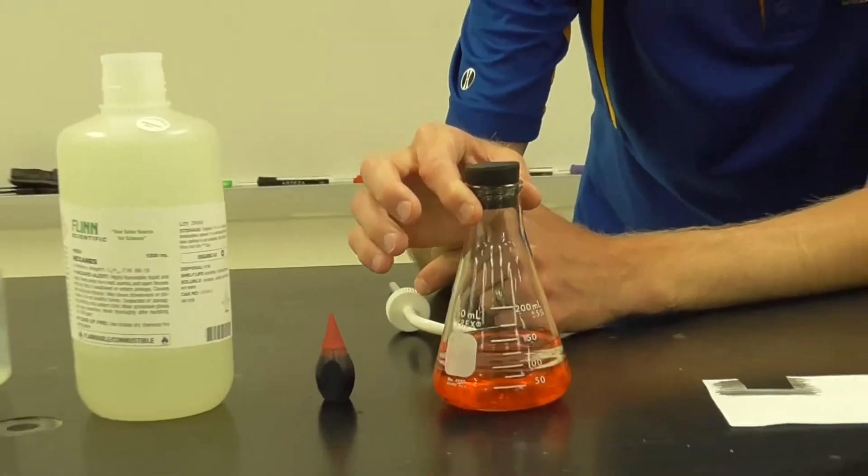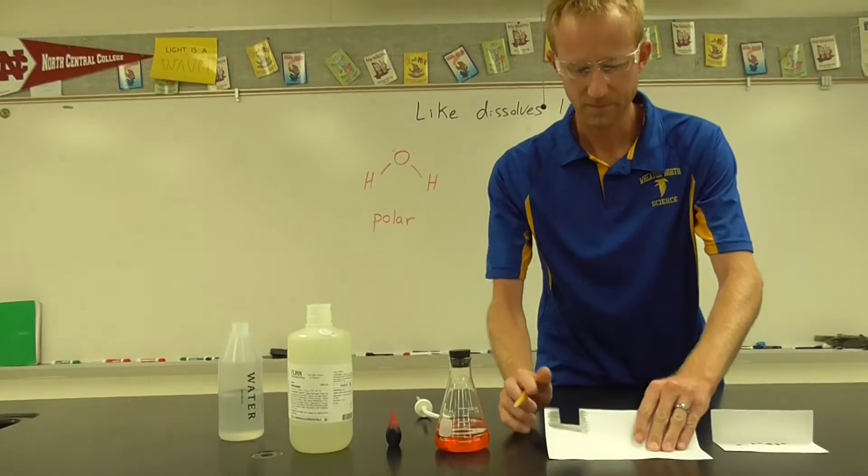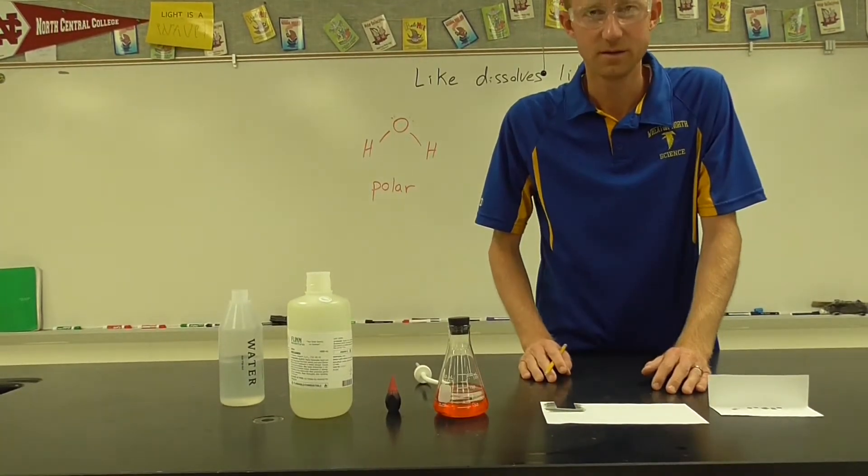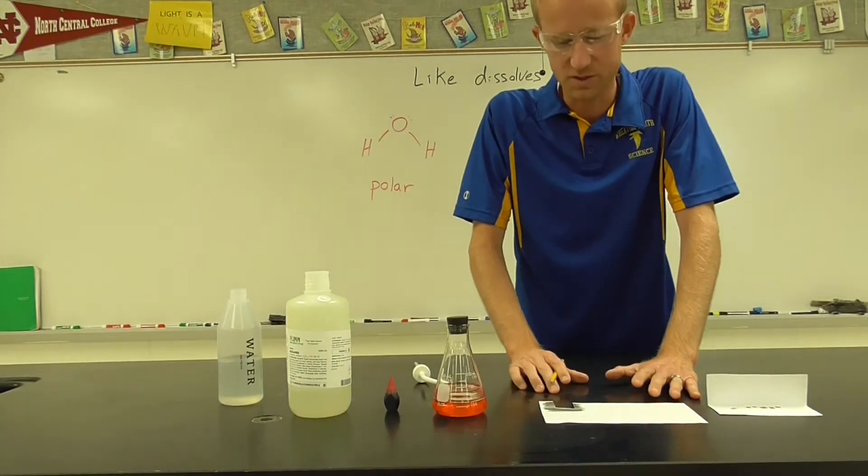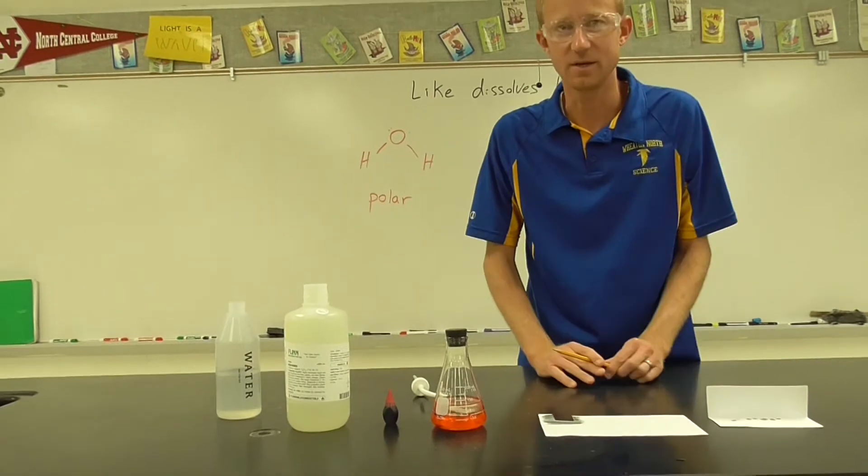Now, what we're going to do next is a little odd. What I've done is I've taken a sheet of paper and drawn graphite on one side. And graphite, as you know, is just carbon bonded to carbon bonded to carbon. Graphite is strictly non-polar.